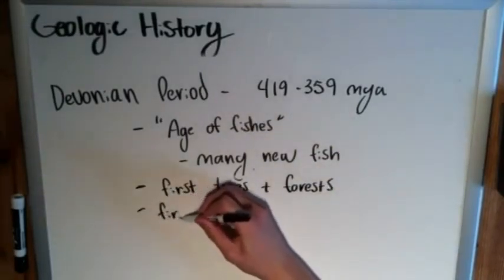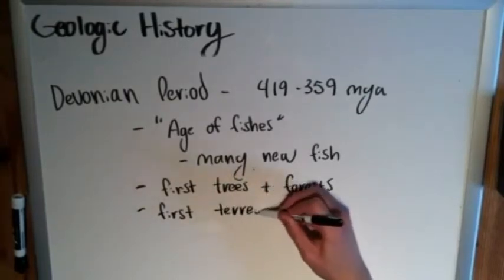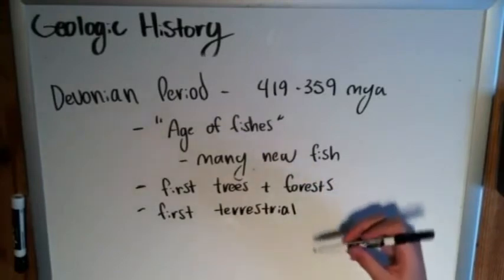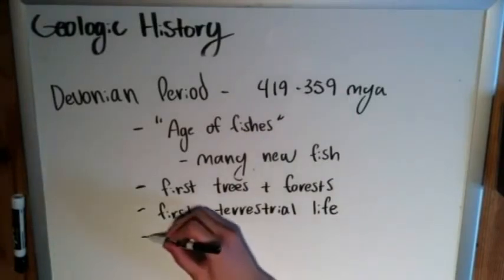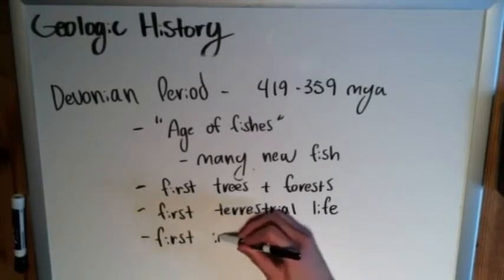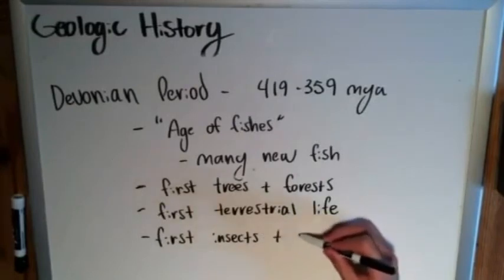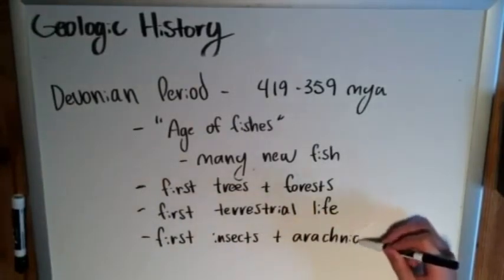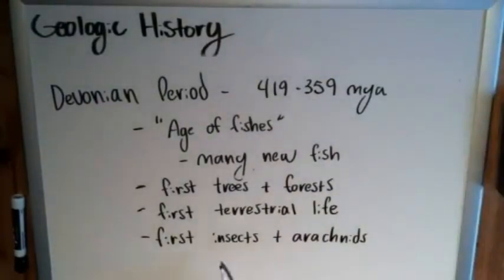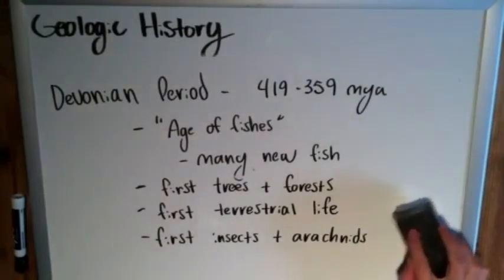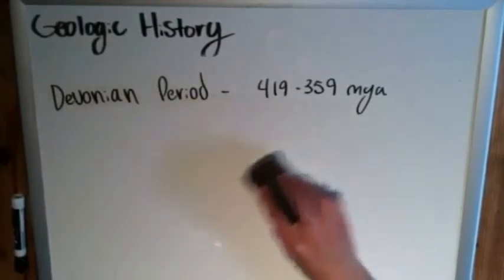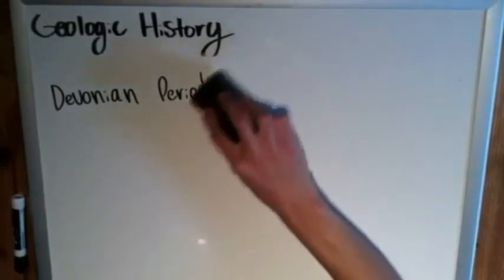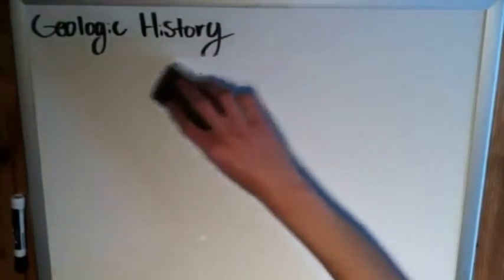The Devonian is also when our first terrestrial life appears — though the fish still dominate, hence the Age of Fishes. This is also when we have our first insects and arachnids. So you can thank the Devonian for creepy crawlies and spiders. It's a pretty interesting period — a lot of marine life, but also the first appearance of terrestrial life and trees and forests, maybe second only to the Cambrian.